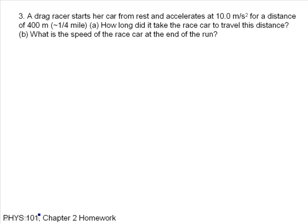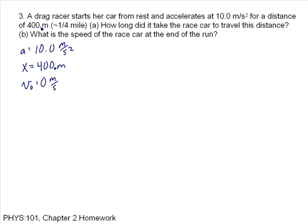A drag racer starts their car from rest and accelerates at 10 meters per second squared for a distance of 400 meters. How long did it take the race car to travel this distance? Let's write down what we know: A equals 10.0 meters per second squared, X is 400 meters, and V-naught equals 0 meters per second. I'll assume three significant figures, so I'll put a decimal place — 400. with the 4, 0, and 0 all significant.